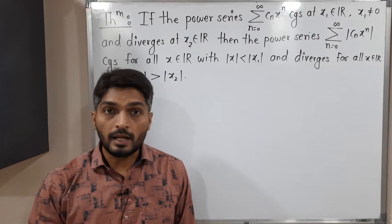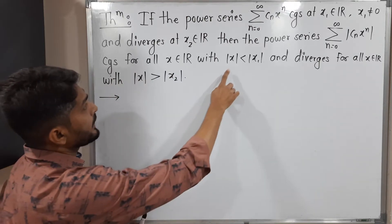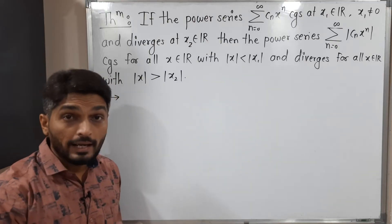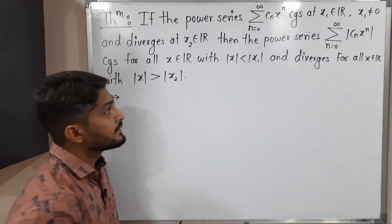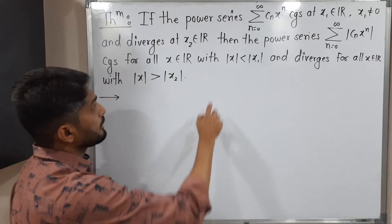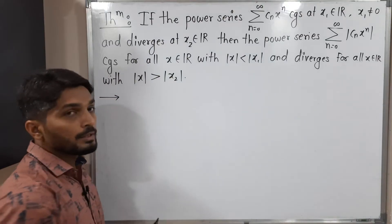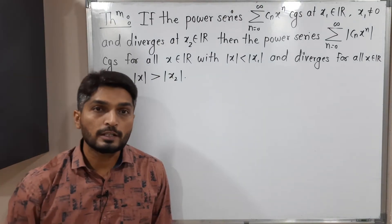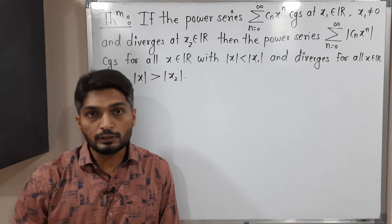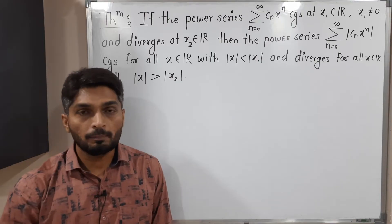Our task is to prove: if you have any point x whose mod is less than mod of x1, then for that x the series is absolutely convergent. And if you have any point x with mod greater than mod of x2, then the series is divergent for that x.